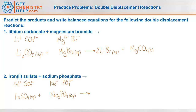So we react these by swapping the sulfate and the phosphate. Iron(II) phosphate would be Fe₃(PO₄)₂. Phosphates are generally insoluble and solid, except with lithium, sodium, potassium, and ammonium — so this is a solid. Then sodium with sulfate gives Na₂SO₄. Sodium-containing compounds are soluble, so aqueous. Again, we have a precipitation reaction where we've made a solid.